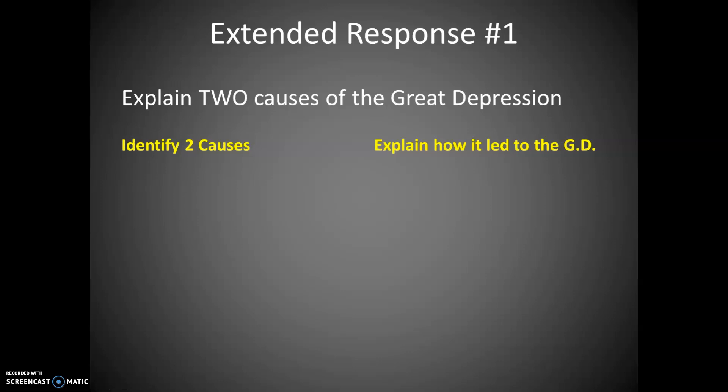The first part is to explain causes of the Great Depression. Anytime I ask you to explain, it means I want you to identify and explain. You can't explain a cause unless you can identify it — that's where the specific evidence comes in. The explanation is your analysis of that evidence. So you'll need to identify two causes of the Great Depression and then for each one explain how it led to the Great Depression — that's the key thing to remember.